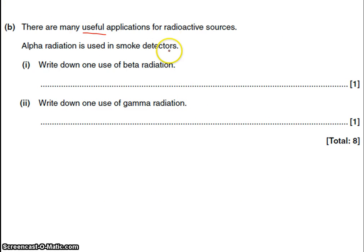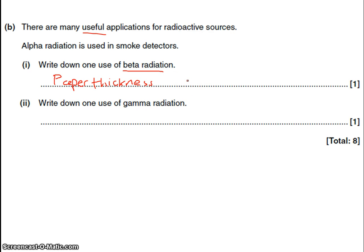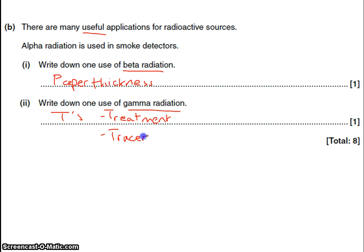This part is about uses of radioactive sources. Alpha is used in smoke detectors. Beta radiation is used in paper thickness monitoring — it penetrates the paper, but if the paper becomes too thick, the amount of beta penetrating decreases, and a computer detects this and squeezes the rollers closer together to correct the thickness. For gamma radiation, think of the two T's: treatment — treatment of cancer (not 'kill cancer'; it can treat cancer) — and radioactive tracers (not just 'detect cancer', which isn't specific enough). Gamma can also be used to kill microbes or bacteria on food, or to sterilise surgical equipment.